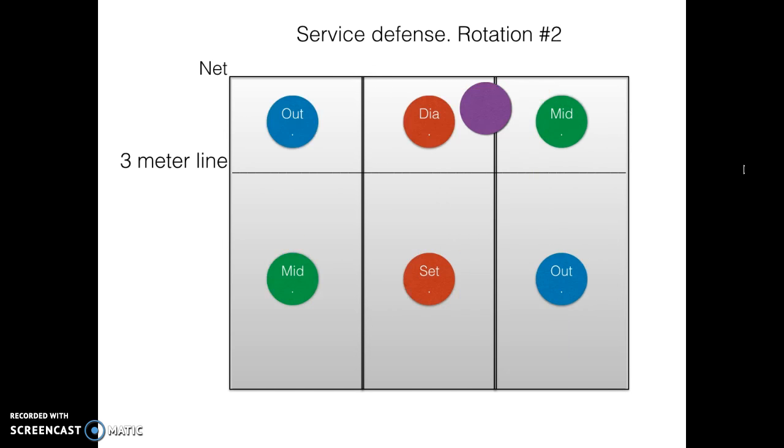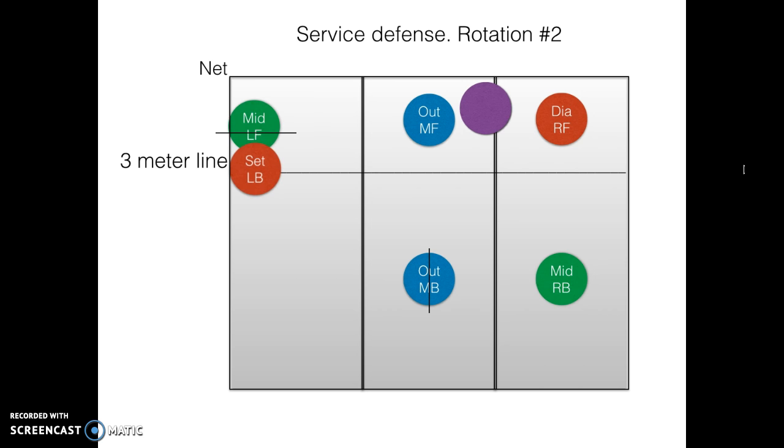Okay, so let's look at rotation number two. The setter has to move away to the back again, and now we can do it like this. We want our outside to pass again because he's a better passer than the middle usually. And the restrictions of the outside are as follows. So as you can see, he's still within his restrictions if he moves like this.